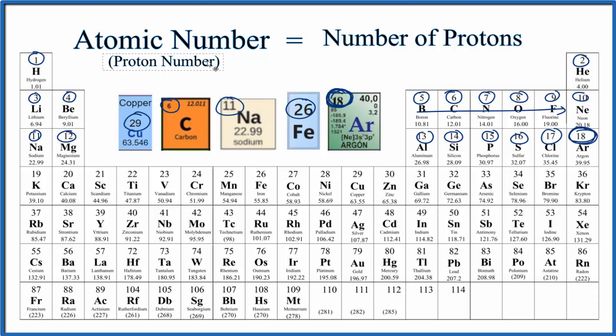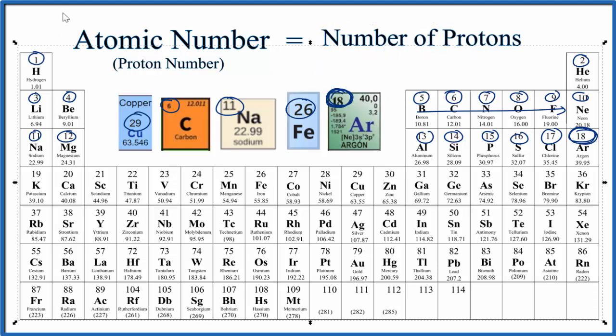To recap, the atomic number, also called the proton number, is the number of protons in the nucleus of an atom. It's the whole number, almost always the whole number, above the element symbol. This is Dr. B. Thanks for watching.